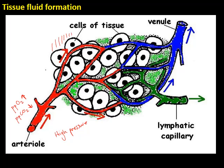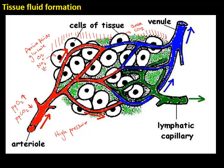When the tissue fluid surrounds the cells, bathing all the cells of a tissue, glucose, oxygen, mineral ions, and amino acids can move into the cell and be utilized. From the cells of the tissues, carbon dioxide and urea are released as waste products that are not needed by the cell, so they exit into the tissue fluid.